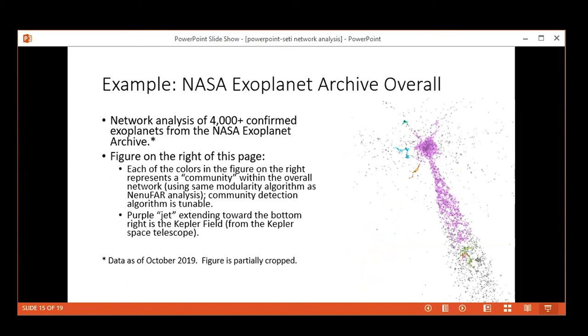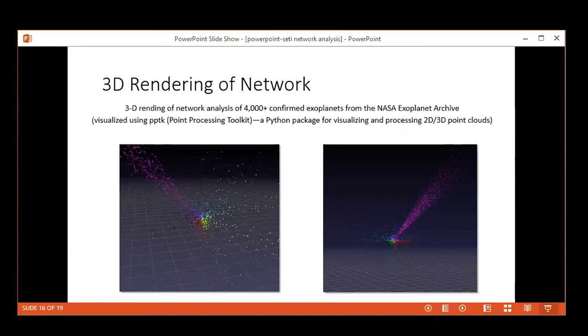Here's the NASA Exoplanet Archive—all 4,000+ confirmed exoplanets as of October 2019. You can see on the figure to the right in the middle, Earth and our solar system is in the middle of that paint splatter, you might say. We're in the middle, and that purple jet you see going off to the lower right is the Kepler field. A lot of the Kepler field is in purple because the data is closely limited to just that Kepler field. We did find some sub-networks within the Kepler field.